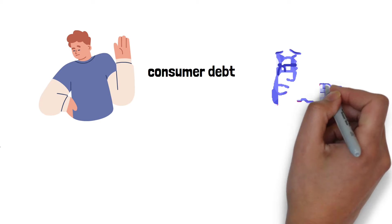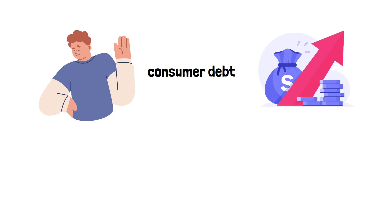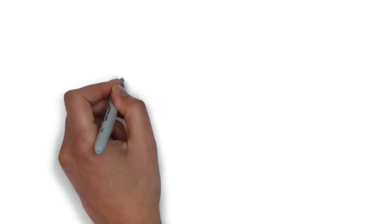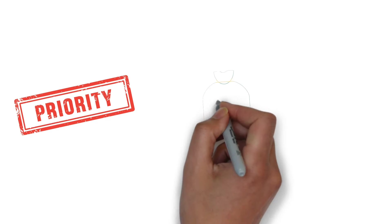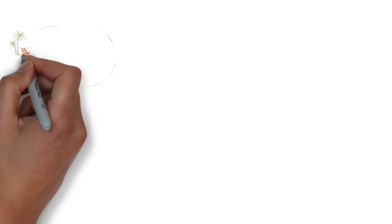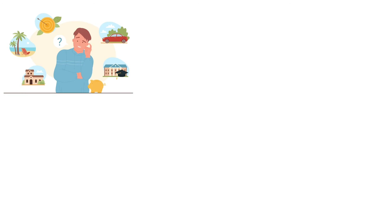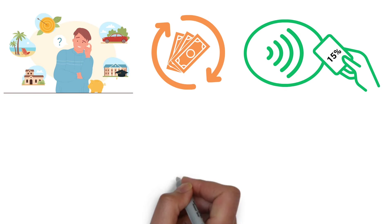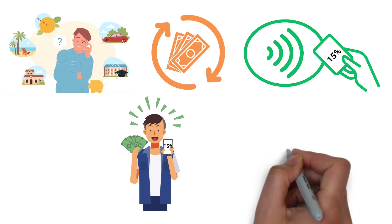The book advises starting with avoiding consumer debt, which typically comes with high interest rates and is often used for buying things that lose value quickly. If you're already in this kind of debt, the priority should be to pay it off as quickly as possible. Paying off a credit card with a 15% interest rate is like earning a 15% return on your money, which is an excellent deal.